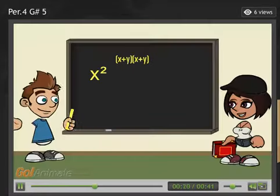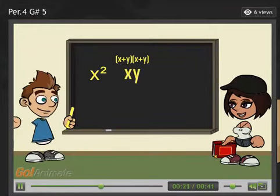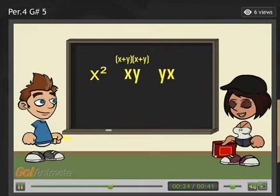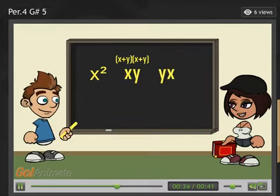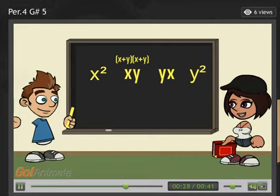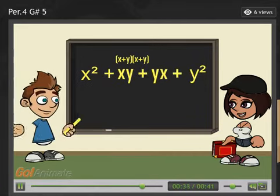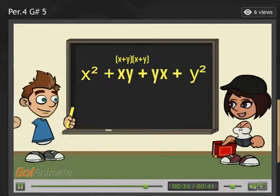You multiply the two first variables. Then you multiply the outer variables. Then you multiply the inner variables. And then you multiply the last variables. Finally, you add them all together. If there are like terms, you would combine them.